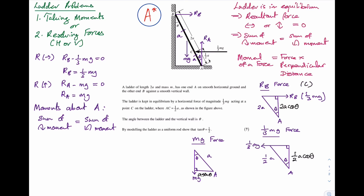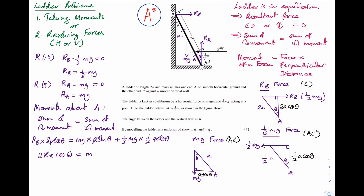The RB force takes the ladder clockwise, the 1/3 mg force anti-clockwise, and the mg force anti-clockwise. The clockwise moment is RB multiplied by the perpendicular distance 2a cos theta. The anti-clockwise moments are mg multiplied by a sin theta, plus 1/3 mg multiplied by 1/2 a cos theta. The a's cancel out, reducing the equation to: 2 RB cos theta equals mg sin theta plus 1/6 mg cos theta.